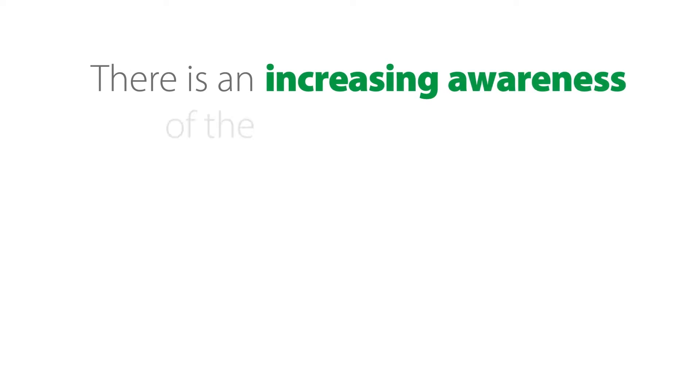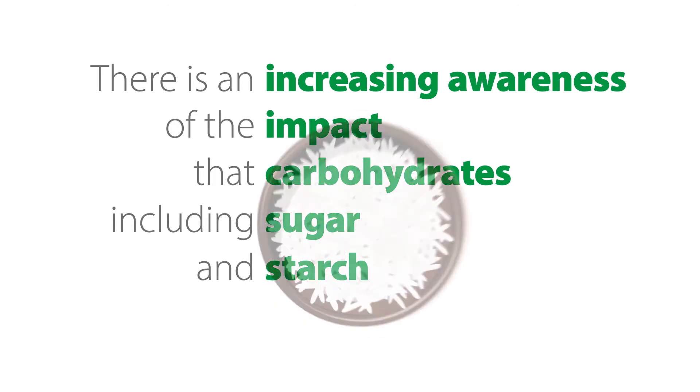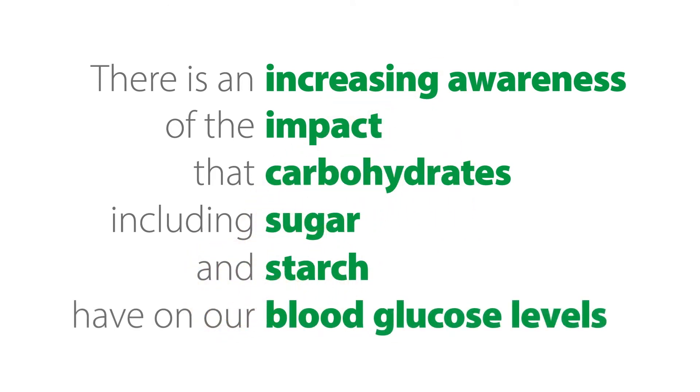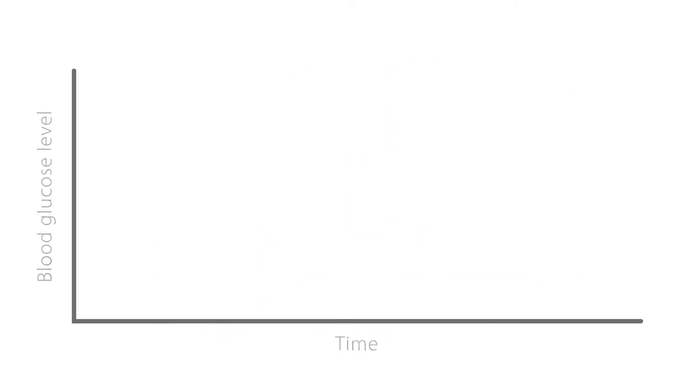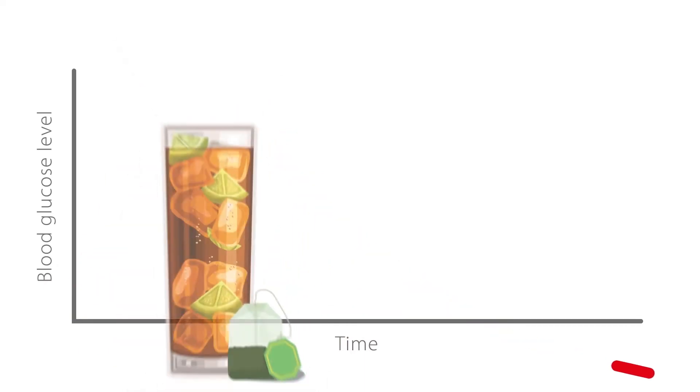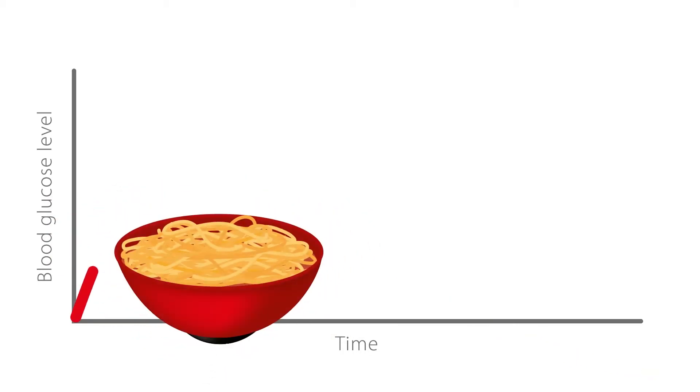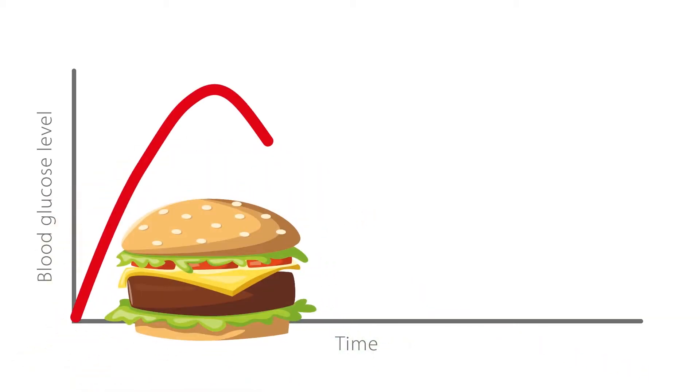There is an increasing awareness of the impact that carbohydrates, including sugar and starch, have on our blood glucose levels. The modern diet is full of foods that can cause a steep and rapid rise in blood glucose, which should be avoided when trying to live a healthy lifestyle.